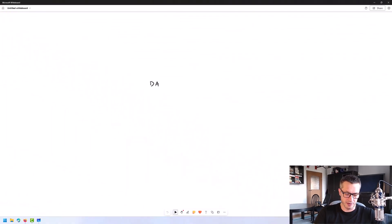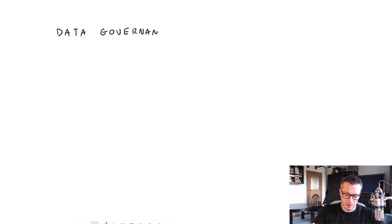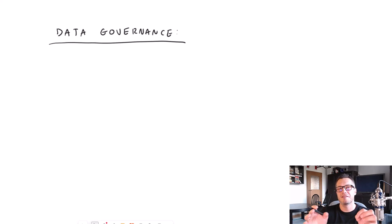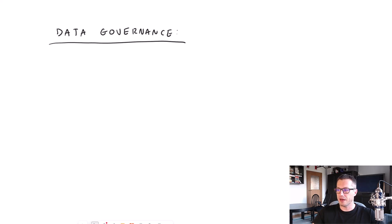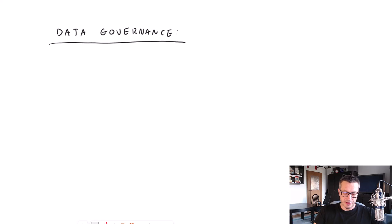Data governance — a term that everyone knows but not everyone really understands. Let's jump into the whiteboard and start talking about what data governance is and why we should care. I like the definition provided by Databricks, and I'll give you a link to the article. Basically, what they wrote was that data governance is an approach to manage an organization's data assets throughout their lifecycle. To make it easier to understand, they defined eight key elements that together build this data governance thing.